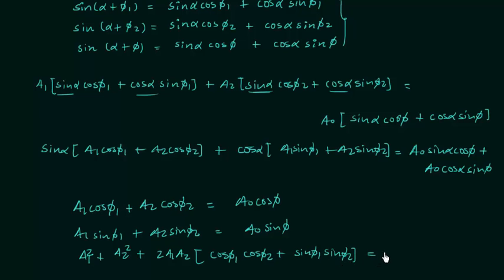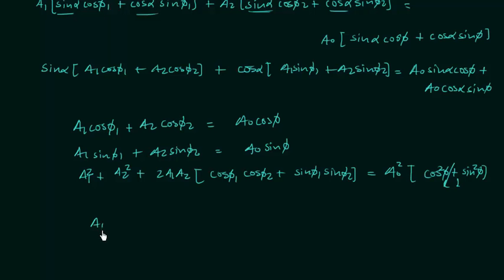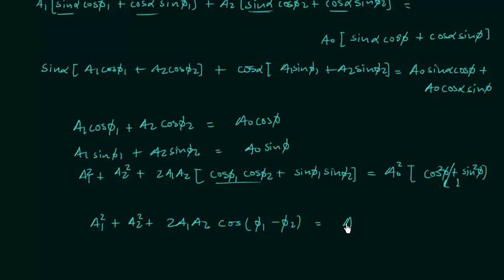Squaring and adding both equations, using cos²φ + sin²φ = 1, we get: a1² + a2² + 2·a1·a2·(cos φ1·cos φ2 + sin φ1·sin φ2) = a0². Since cos φ1·cos φ2 + sin φ1·sin φ2 = cos(φ1 − φ2), the right-hand side gives a0². This is the same result used in the problem above.